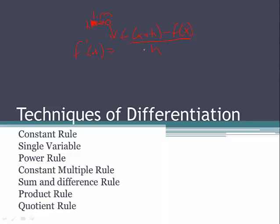We already did that, and we found that it was the slope as h got very, very close to zero. Now we're going to start taking some shortcuts, because we have the understanding of where it's coming from. We're going to go through constant rule today, single variable, power rule, constant multiple, and sum and difference. Tuesday and Wednesday are each going to have a day devoted to product rule and quotient rule, just because they're a time-consuming process.